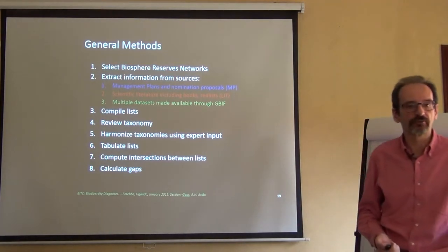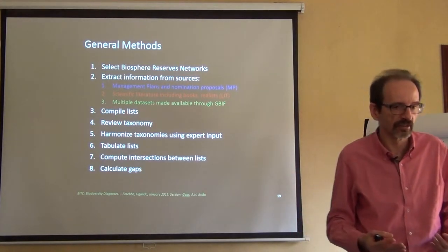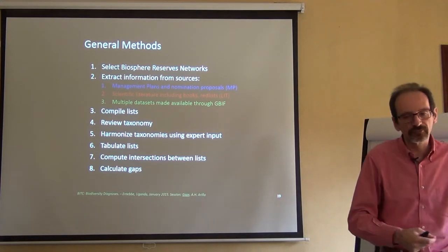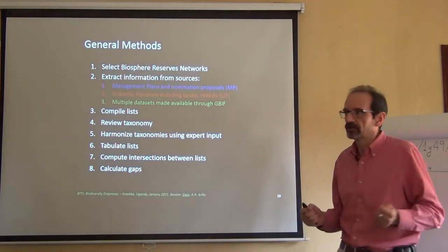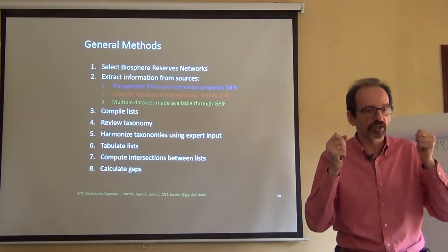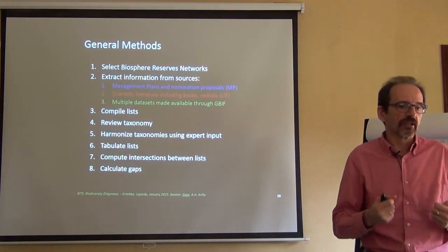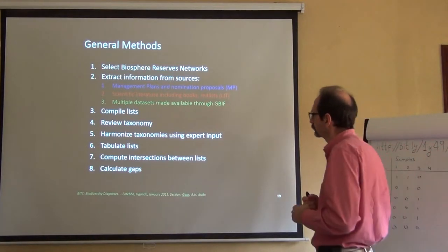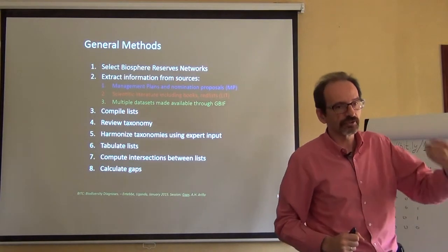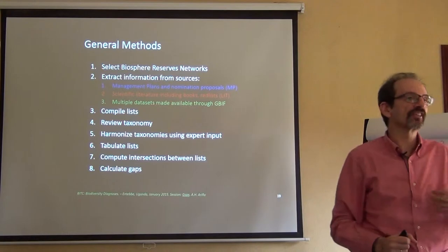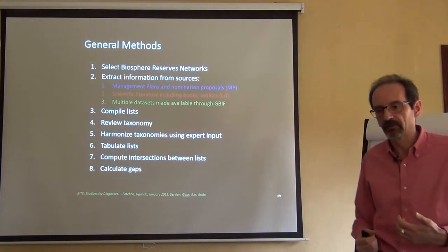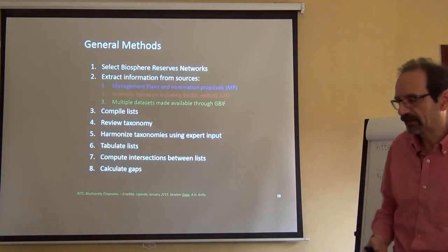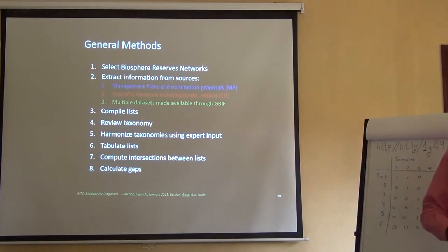For instance, we go to the management plans of each reserve. Each reserve must have a management plan that explains what you can do, what you cannot do, how often you have to conduct a survey, etc. This is a document which has been prepared specifically for each reserve, so assumedly it should contain the most authoritative set of knowledge about a reserve. We also resort to scientific literature — we scan the literature and we look for data that coincides with the biosphere reserve, whether about the reserve itself or the area, or all the data that happened to occur in the same place.